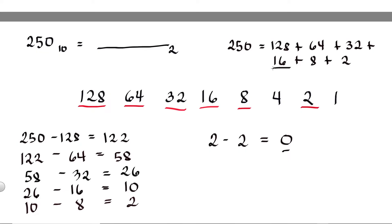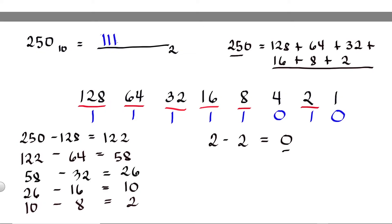Make sure these numbers on the right are equal to 250. We have 128, so put 1 under 128. We have 64 and 32, so both are 1s. 16 and 8 are also 1s. We don't have 4, so this is 0. We do have 2, so this is 1. And we don't have 1, so this is 0. So the binary equivalent of 250 decimal is 11111010. That's how you convert decimal numbers into binary using the repeated find and subtract method.